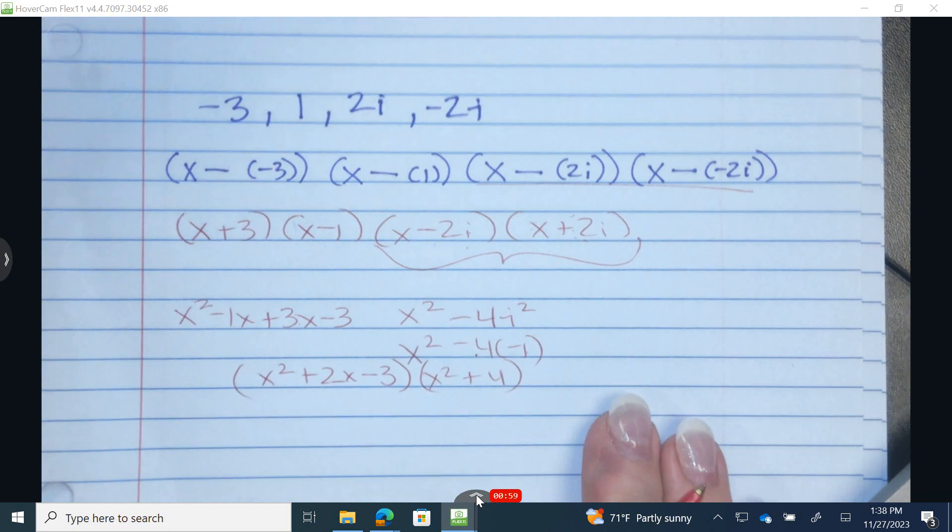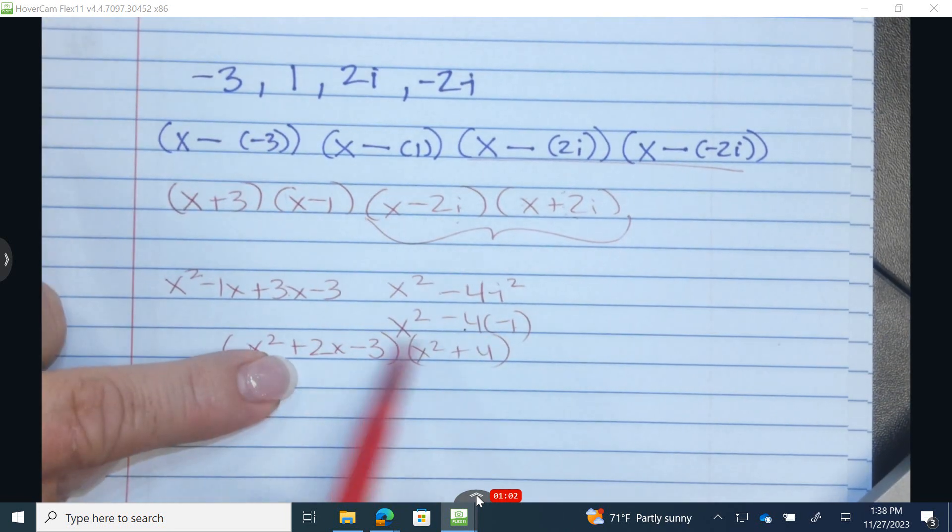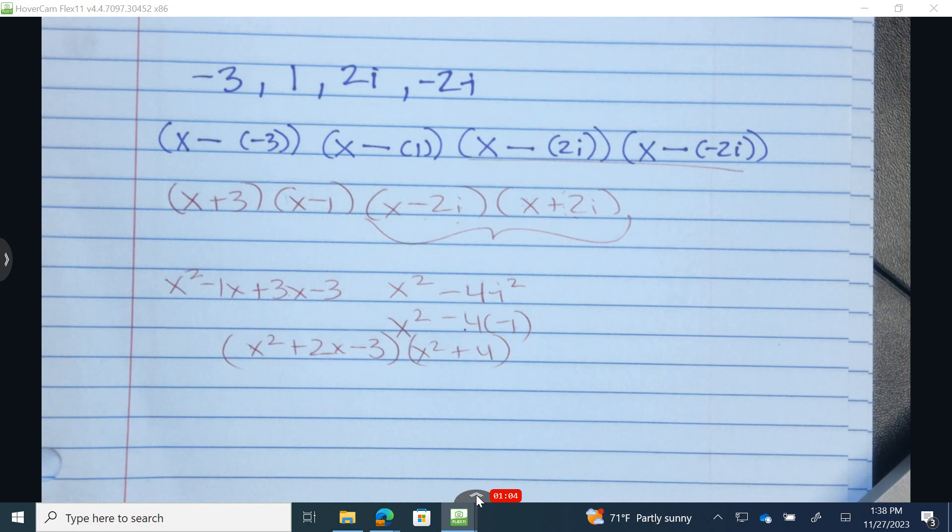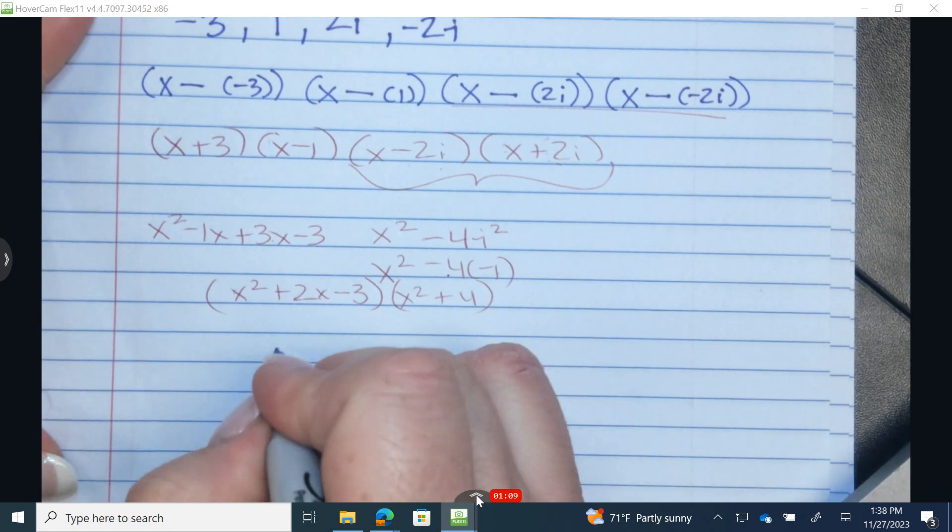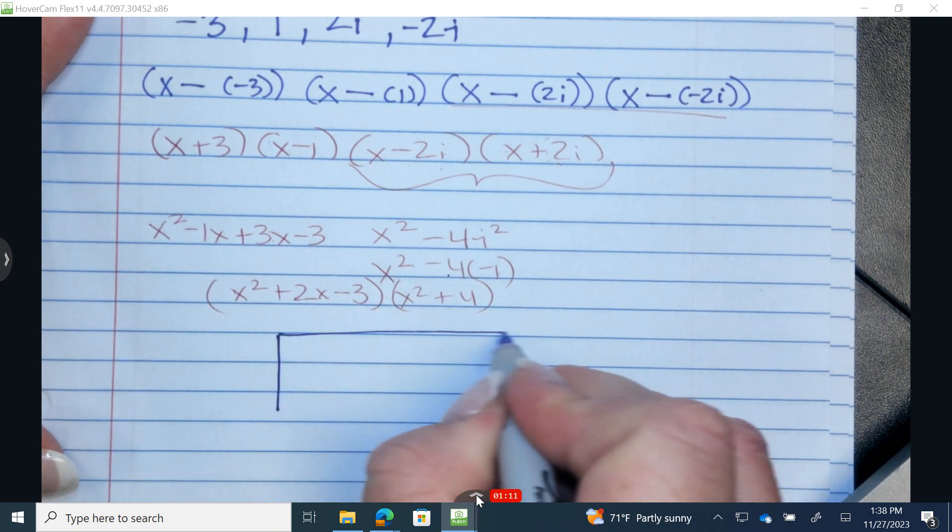Now, yes, we could definitely go through and multiply this, multiply this, multiply this, right? You have six different terms, but I want to show you an alternative way that some students prefer. This is the box method that you may have previously learned.